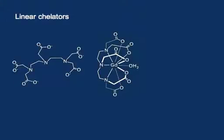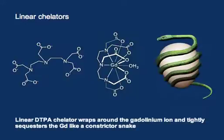When you think about a linear chelate, there are two different ways that we can tightly wrap a chelator around gadolinium to put eight chemical bonds around it. One way is to wrap around like a boa constrictor, where the molecule coils around the gadolinium — like a snake around an egg.